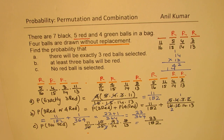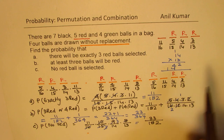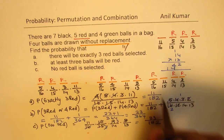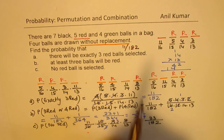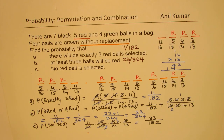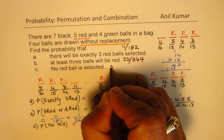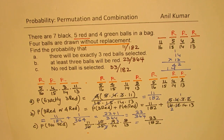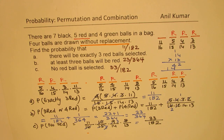I hope you understand and appreciate this method. We did not use permutation or combination — basic counting principles helped us find the probability. So we get all our answers: the probability of getting exactly 3 red balls is 11 out of 182, getting at least 3 red balls is 23 out of 364, and no red balls is 33 over 182. I will also attach the solution where we used combination, and how to calculate the combination part — that should be the next step for you.